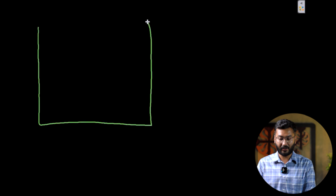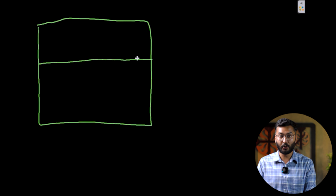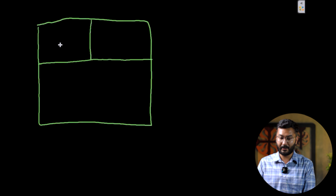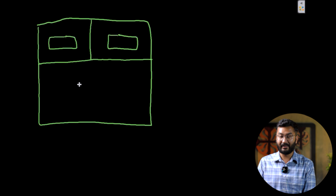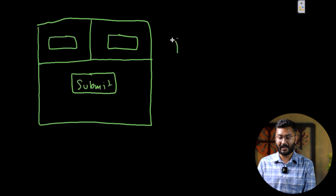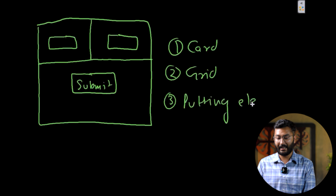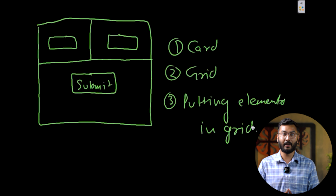Before implementing in VS Code, here are the proper steps for creating this kind of UI. First, create a card-like structure that gives a white background to the component. Then, divide the component into two parts — one for the fields and one for the button. In the first part, divide into two columns and place one field in each. Then in the second row, create the Submit button. The three steps are: create a card, use the grid, and place elements in the grid.